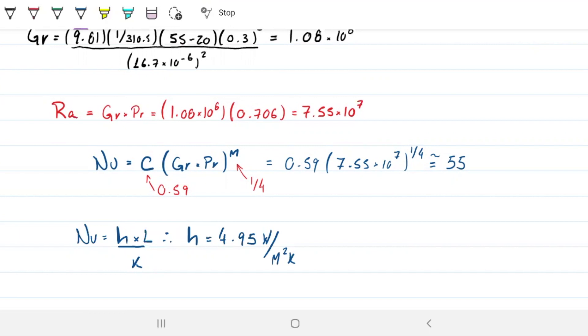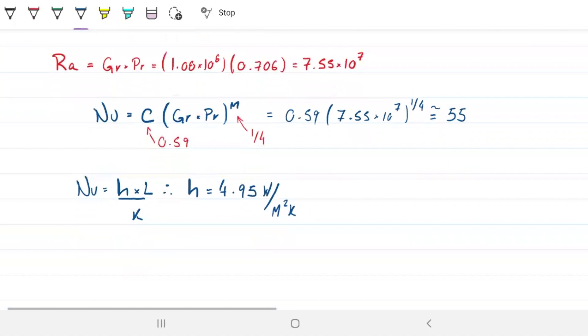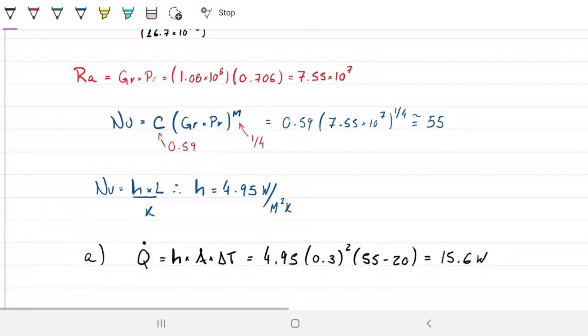Now that we have this, then it's easy to find what is the heat flux coming out of one side of the plate - part A, what is the heat flux coming from one side of the plate? Well, that is h times A times delta T, h being 4.95, A being 0.3 times 0.3 meters, and this being 55 minus 20 Celsius or Kelvin, so this is 15.6 watts. That is our first answer.